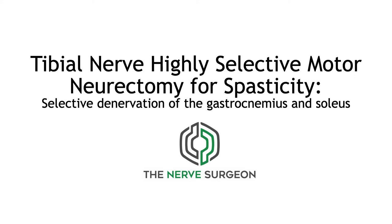Selective motor neurectomy is a relatively new method of treatment for spasticity. In a patient with a static deformity and a static degree of tone, it is possible to selectively section branches to overactive muscles to control that tone in order to improve functional movement in the limb and maintain function in the affected muscle.